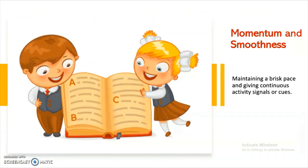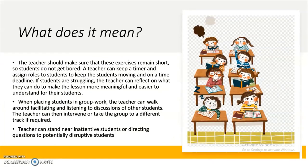Momentum and smoothness: maintaining a brisk pace and giving continuous activity signals or cues. The teacher should make sure that exercises remain short so students don't get bored. A teacher can keep a timer and assign roles to students to keep them moving. If students are struggling, the teacher can reflect on what they can do to make the lesson more meaningful and easier to understand. When placing students in group work, the teacher can walk around facilitating and listening to discussions. The teacher can then intervene or take the group to a different track if required. Teachers can stand near inattentive students or direct questions to potentially disruptive students.